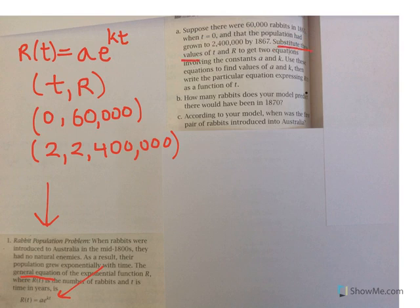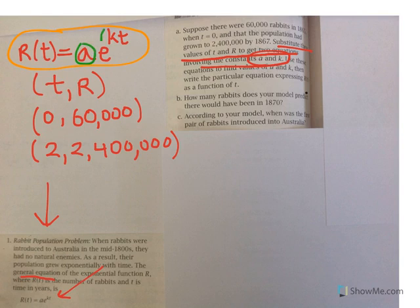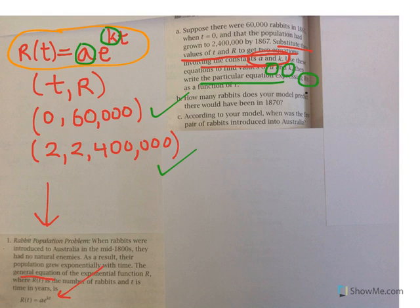Substitute these values of t and r to get two equations involving the constants a and k. So we have our general model here, and we want to figure out what a should be and what k should be for the particular situation that we have. Use these equations to solve for a and k. Then write the particular equation expressing the rabbit population as a function of time.